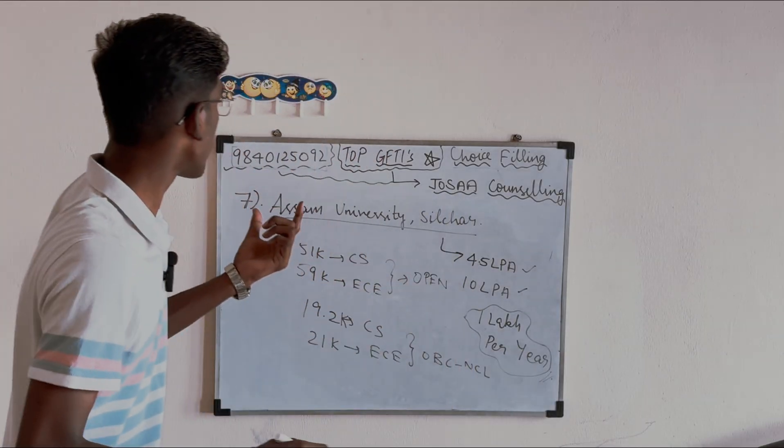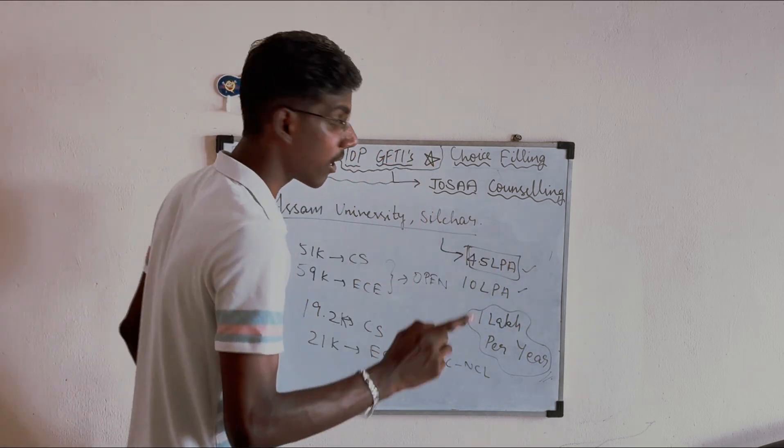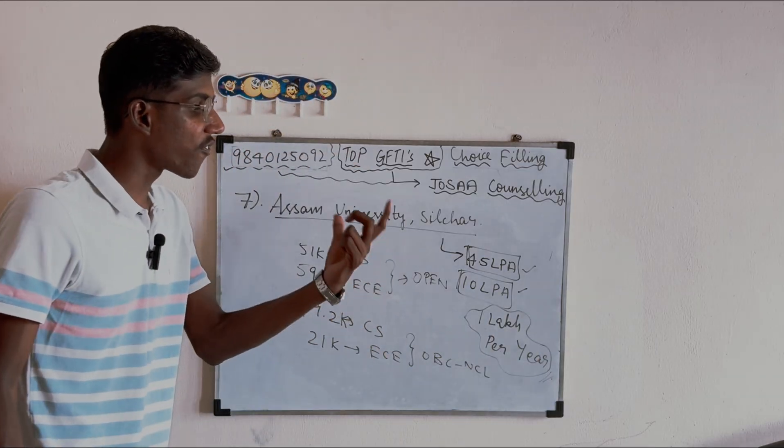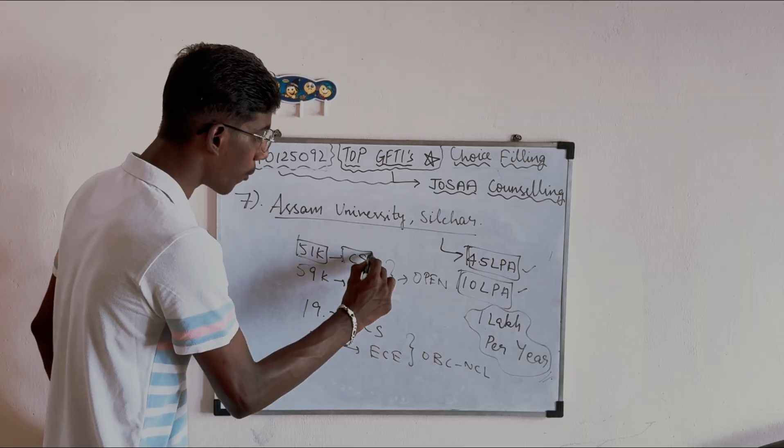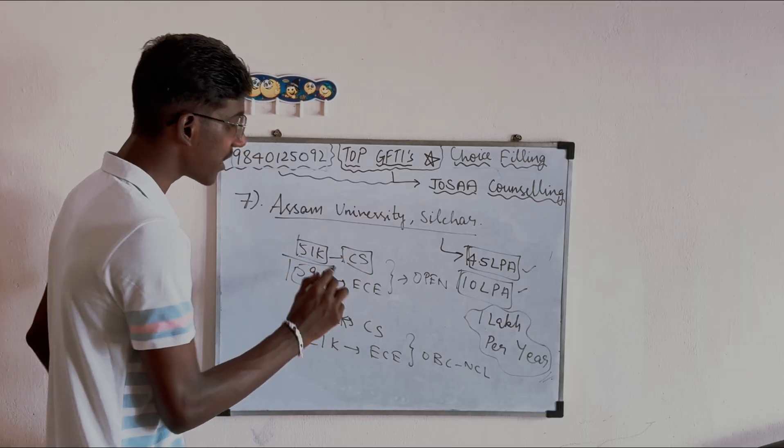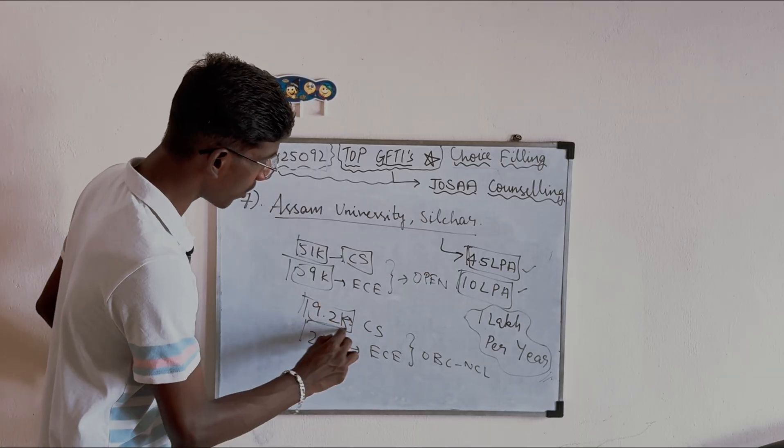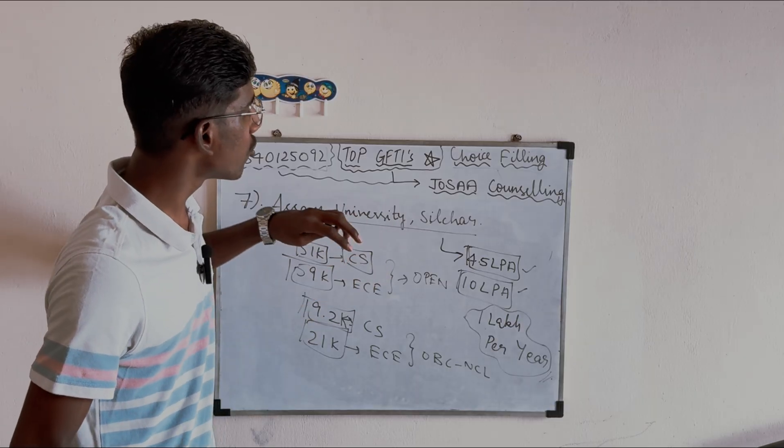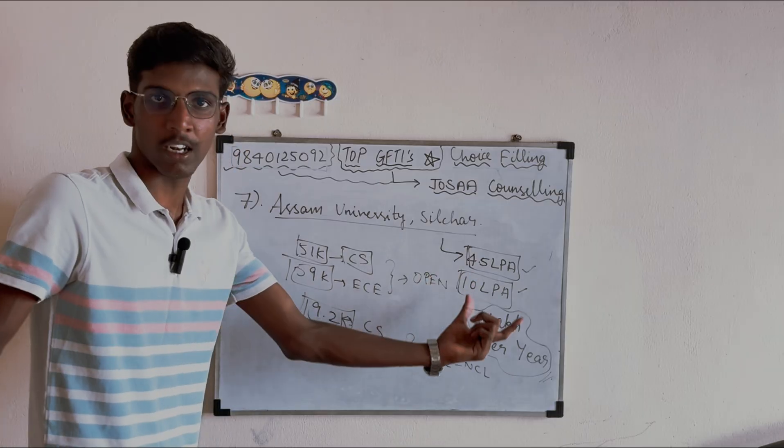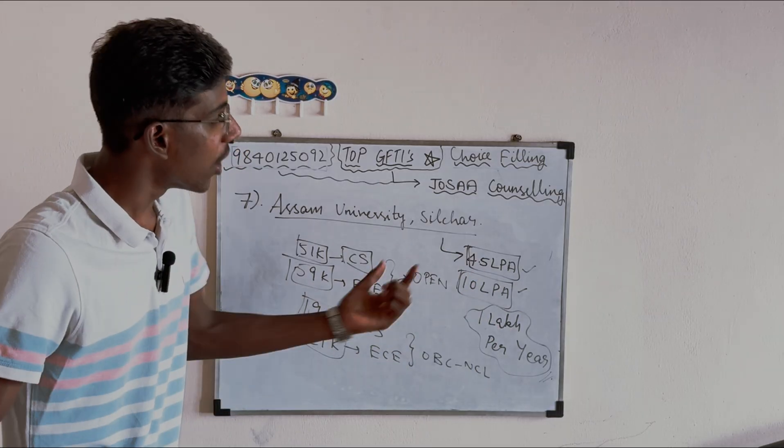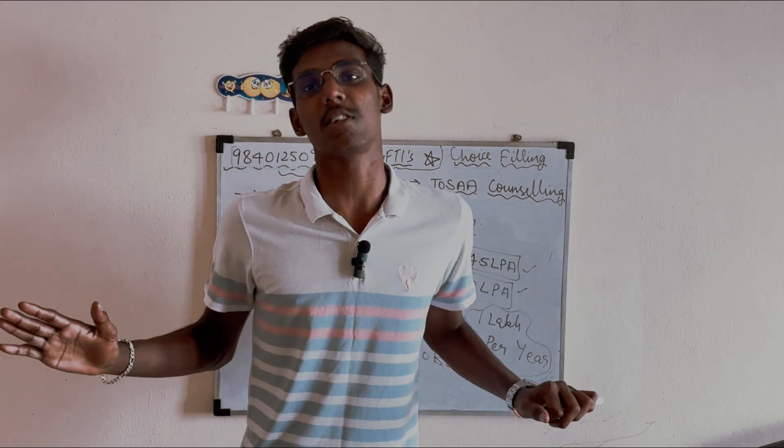Next GFTI: Assam University Silchar. Average is 4.5 LPA, highest is 10 LPA. Fee structure is 1 lakh per year. Ranking: 51k for CS open category, 59k for ECE open category. OBC: 19.2k for CS and 21k for ECE. For North side students, this is a good option with low fees.